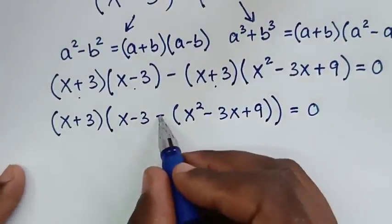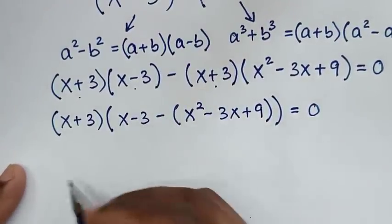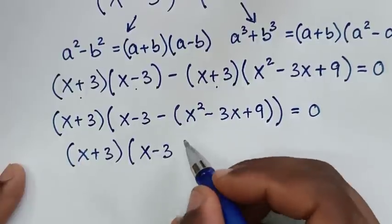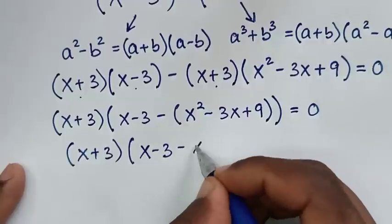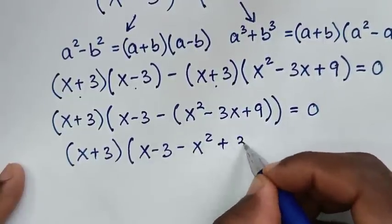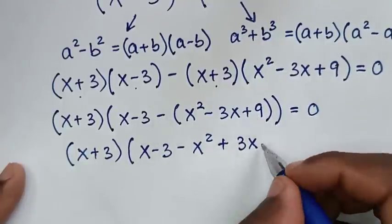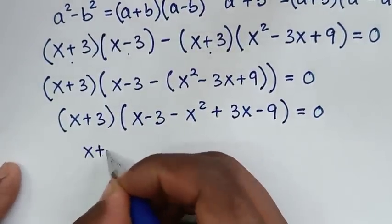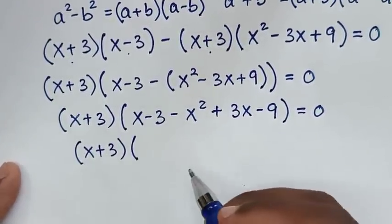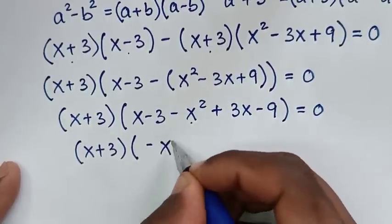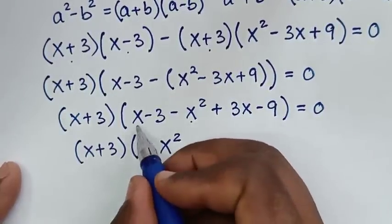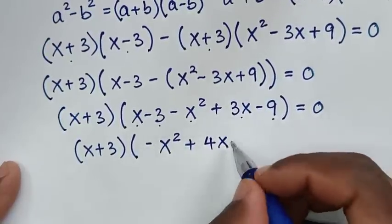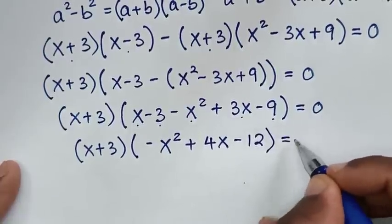We open the bracket by the negative. It will be (x plus 3) times (x minus 3 minus x squared plus 3x minus 9) equals 0. Combining like terms inside the bracket: negative x squared plus 4x minus 12, equal to 0.